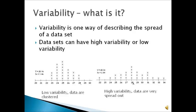On the left-hand side, the data are clustered together and it appears to have low variability. You can see that many of the readings are close to the mean of 25.16. The standard deviation of 1.46 is really not very large compared to the range of the data.